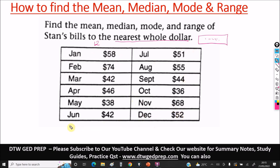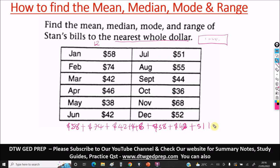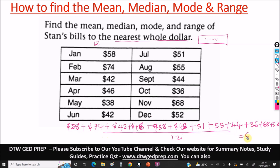To get the mean — the mean just means the average — you need to add all the values, then divide by the number of items. We have January to December, so that's 12 items. Adding them all: 58 plus 42 plus 46 plus 42 plus 51 plus 55 plus 44 plus 36 plus 68 plus 52 — you can use your GED on-screen calculator. We divide all of this by 12, and we get 606 divided by 12.